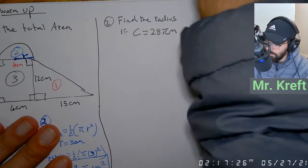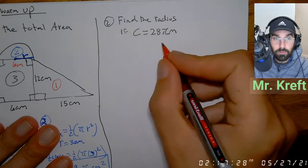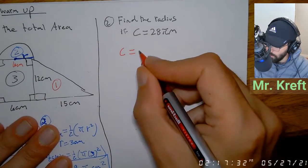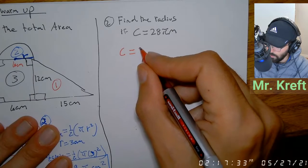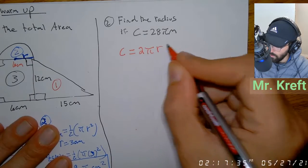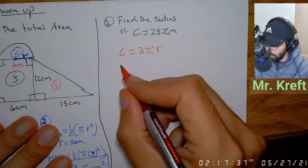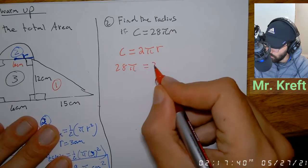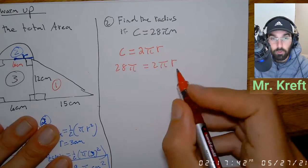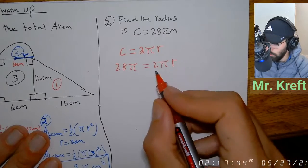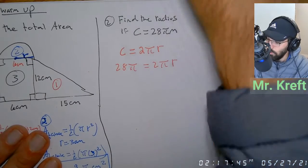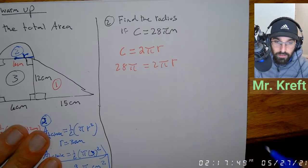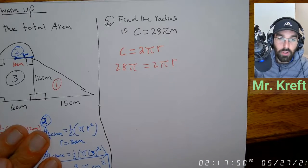The next problem says: find the radius if the circumference equals 28 pi. Circumference equals 2 pi r, so I'll combine those: 28 pi equals 2 pi r, and we need to solve for r.